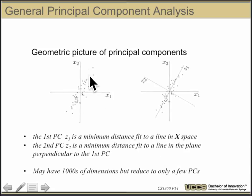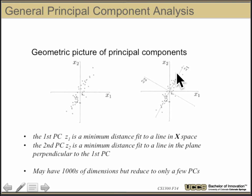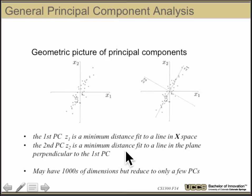To visualize: imagine data in two dimensions. The first principal component z1 is the axis where the data is mostly varying — this sort of slanted but slightly vertical line. In general, after finding one principal component, I can project all the data in the direction orthogonal to that principal direction and find a new direction. The second principal component minimizes the fit distance to the plane perpendicular to the first. And if I was in 3D or 4D, I'd project perpendicular to that component and still have a 2D problem left, solving it recursively. Even starting in thousands of dimensions, we may end up reducing to only a few principal components.